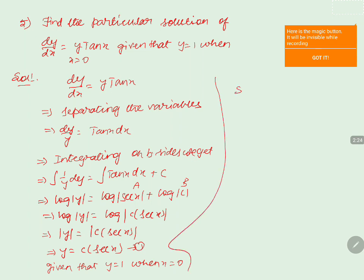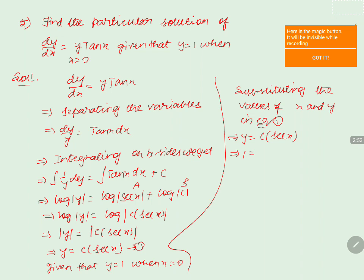Substituting the values of x and y in equation 1, we get 1 = c·sec(0). Since sec(0) = 1, this gives 1 = c·1, therefore c = 1. We call this equation 2.